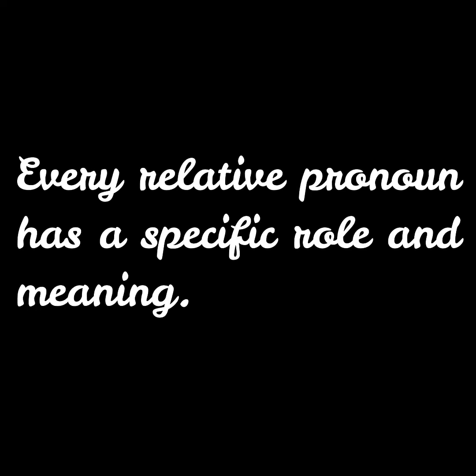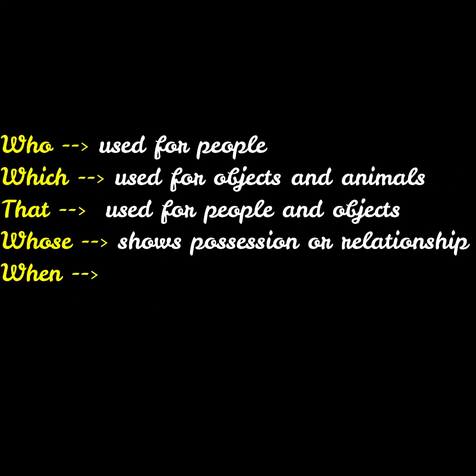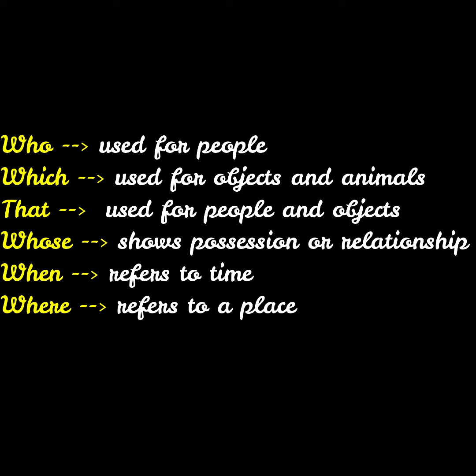So why are there so many relative pronouns? Every relative pronoun has a specific role and meaning. 'Who' is used for people. 'Which' is used for objects and animals. 'That' is used for people and objects. 'Whose' shows possession or relationship. 'When' refers to time. And 'where' refers to a place.